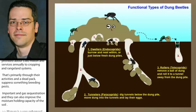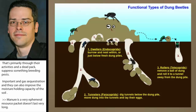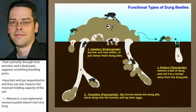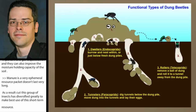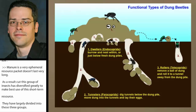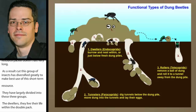Dung beetles have largely divided into three groups: the dwellers, that live their life within the dung pat; the tunnelers, that form brood balls out of the pat and dig them down into the soil, well into the root zone for plants to eventually reach those nutrients; and the rollers, that carve a piece of dung out of the pat, move it some distance away, and then bury it.